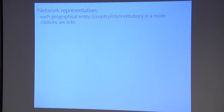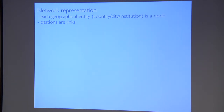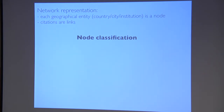As usual in this field, it's natural to represent the system as a network. There are many different granularities to consider: the country, the city, the institution. In each of those, we consider a network where each node is a geographical entity — a country, city, or institution — and the citations between them at that level are the links.